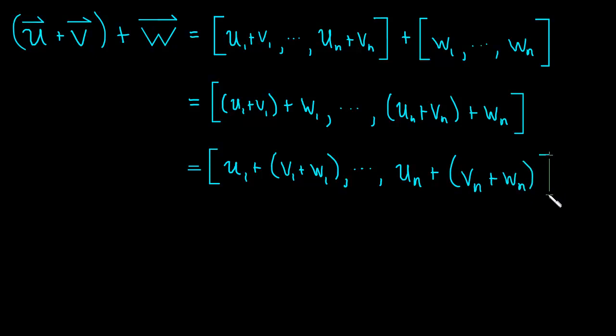And we're almost done. And now we can break this up into the vector u, u1 all the way to un, plus the vector v1 plus w1 all the way to the end, vn plus wn. And this, of course, is just u plus (v plus w). And so we've proved that vector addition is associative.